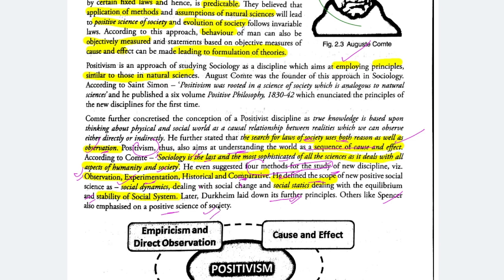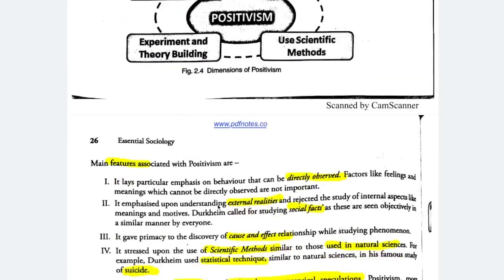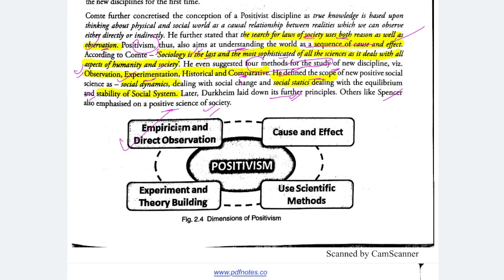Spencer said that when a body is dissected, one part is coordinating and working with another. If the heart is pumping blood, it reaches each organ. If the liver is filtering, the body stays clean. If the liver stops functioning, the body will not survive. Similarly, if any part of society stops functioning, society will not survive — all parts work in coordination. These are the four core principles: empiricism and direct observation, cause and effect, use of scientific method and experimentation, and theory building.